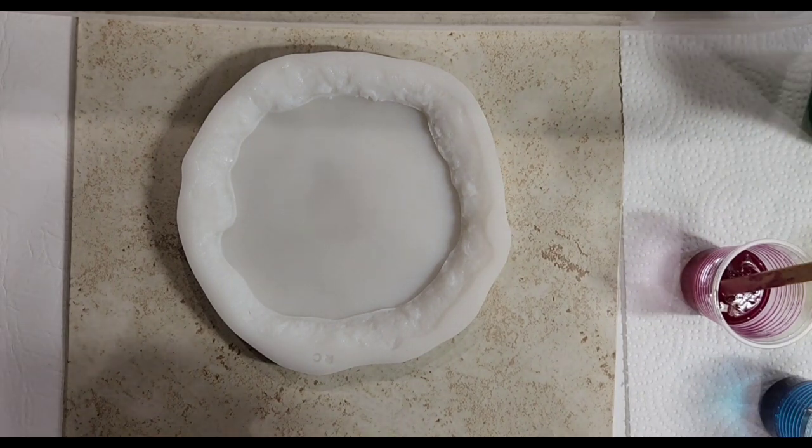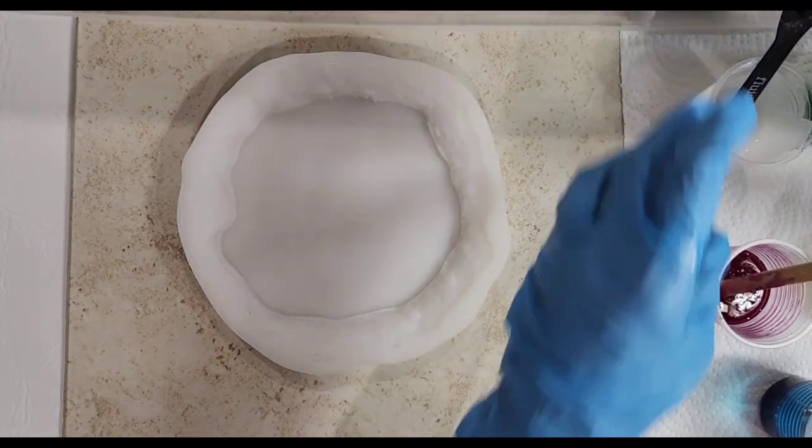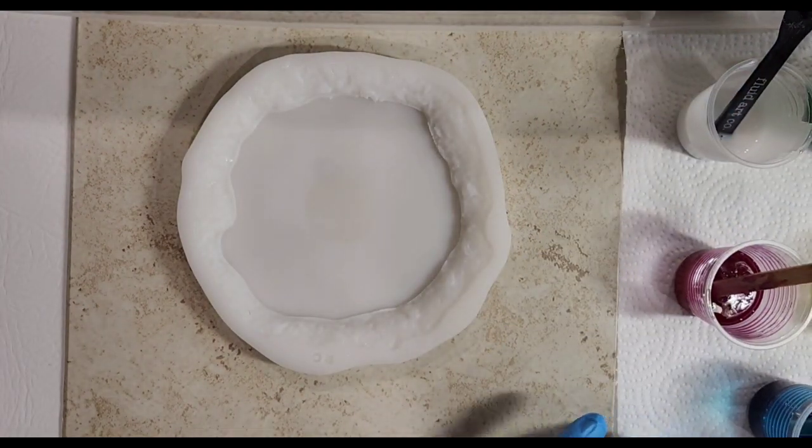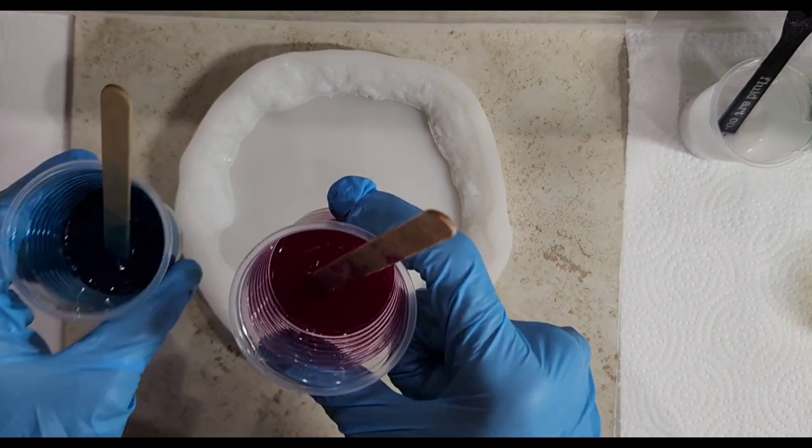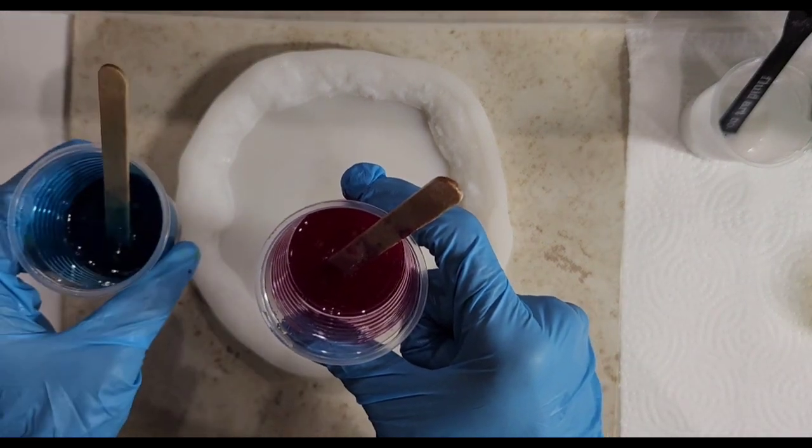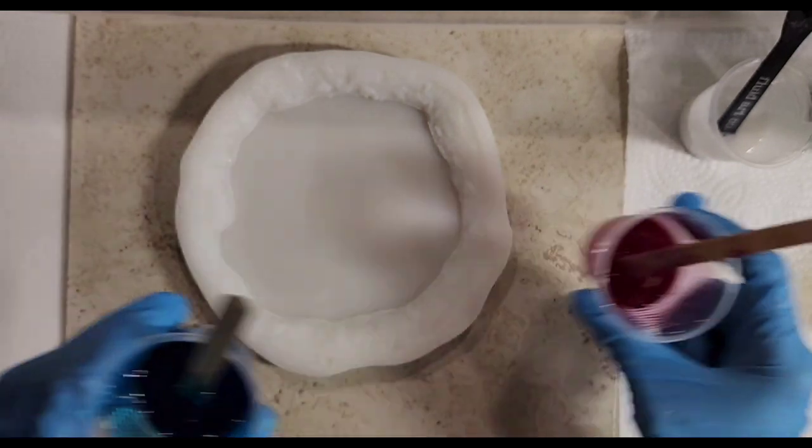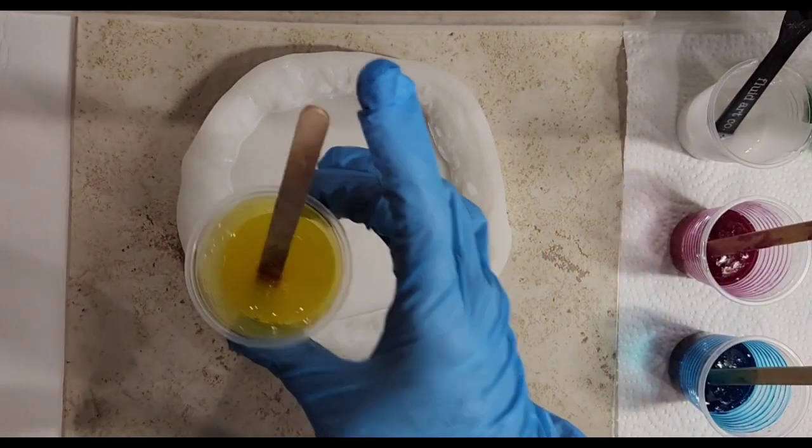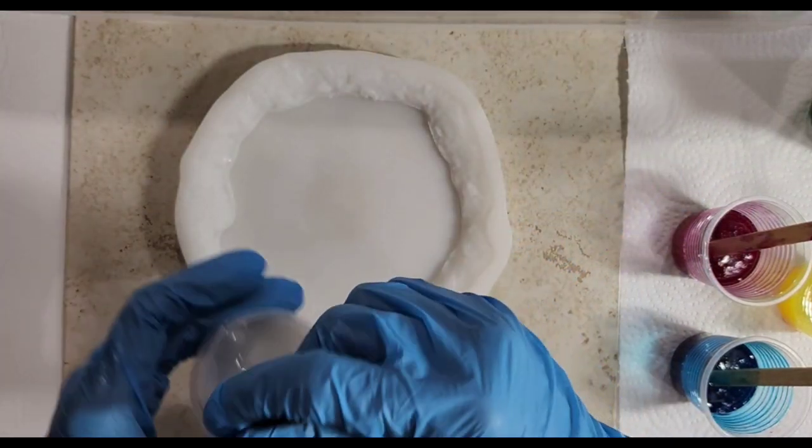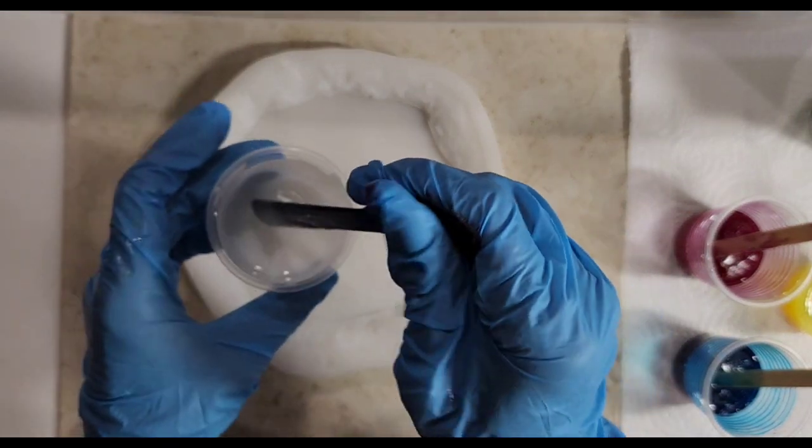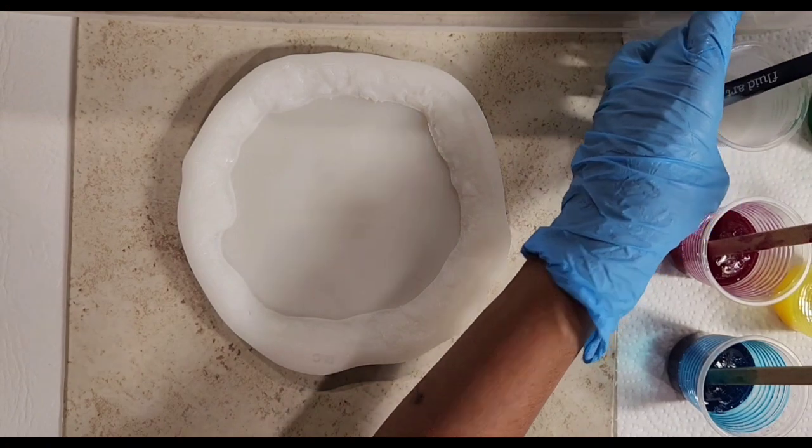So I have mixed up some Art Pro which is from resinpro.com. I have mixed up three colors: a phthalo turquoise, quinacridone crimson, and a primary yellow, all from Holbein acrylic ink. I have mixed up Cast and Craft in my white.